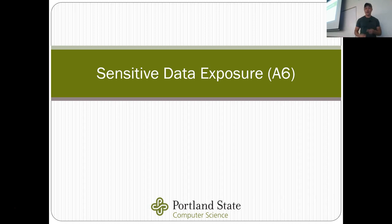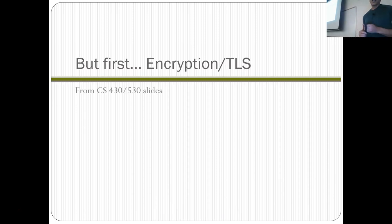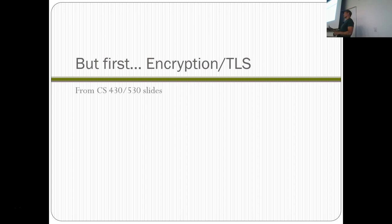The next thing I want to talk about is sensitive data exposure — that's A6. Before I talk about it, I need to cover encryption, TLS, and HTTPS, because having HTTPS enabled is essential for hiding your sensitive data, at least in flight. I'm going to give you a crash course on how TLS works and how it applies when doing HTTPS.